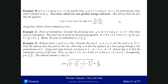Two lines which are not parallel always intersect. If you have y equals m1x plus b1 and y equals m2x plus b2, you can solve for x to find the x-coordinate of the intersection. That gives x equals b1 minus b2 divided by m2 minus m1. Since the lines are not parallel, m2 minus m1 is not zero, so you can always solve for x.